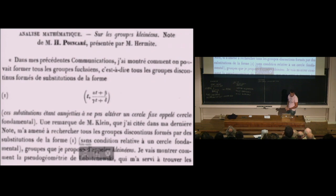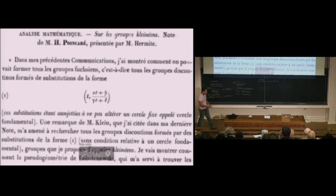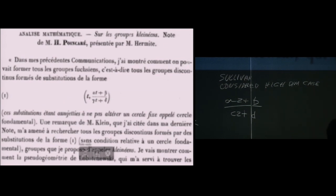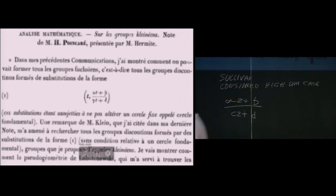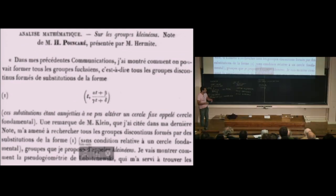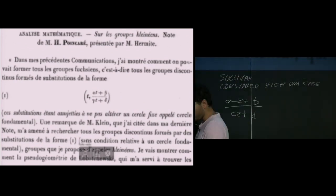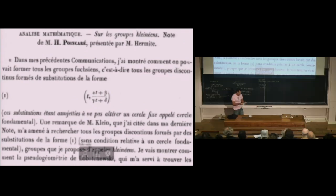Kleinian groups are named for Klein. Fuchsian groups are motions of the form az+b/cz+d that preserve the unit disk. Poincaré — and Klein considered all transformations of the Riemann sphere, removing this restriction. Since the Riemann sphere is the boundary of hyperbolic 3-space, this corresponds precisely to one dimension up from the Fuchsian case. Sullivan extended Patterson's theory to this setting, leading to considerable further development over many years.